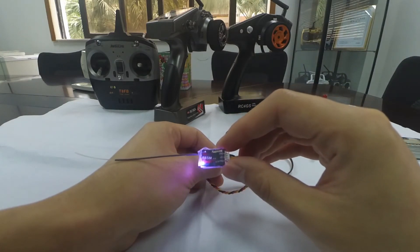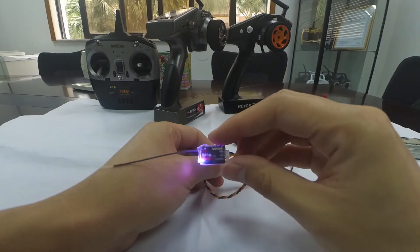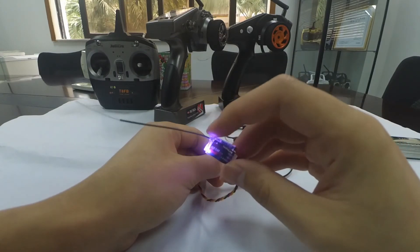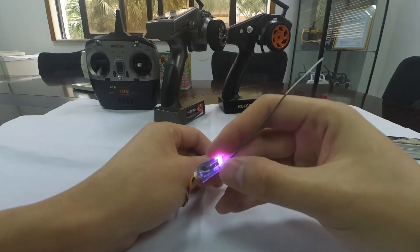There are totally two signal outputs for RASM: PPM or S-BUS. You can see that the current LED color is blue and purple meaning its current signal output is S-BUS.